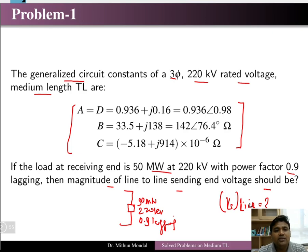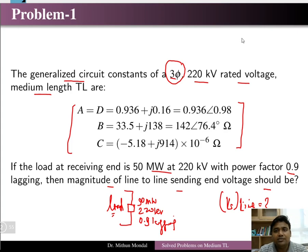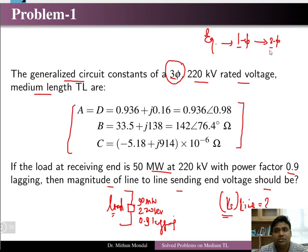Since the system is three-phase, all the load data given are three-phase equivalent. We need to convert to single-phase equivalent to solve the problem, then convert back to three-phase quantities. The power of 50 megawatt corresponds to three-phase power, and 220 kV is the line voltage.